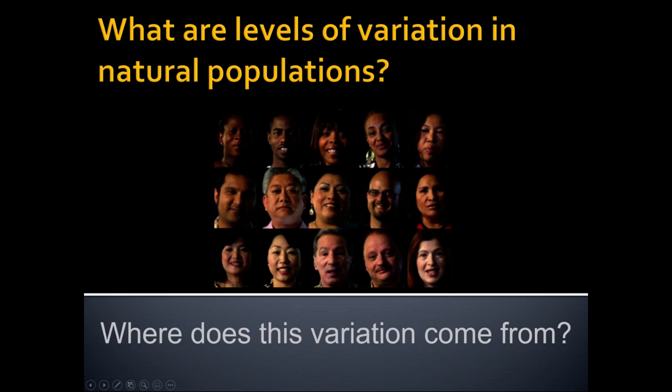In general, levels of variation in natural populations are generally very high. We can see this in our own species and in others. Today, we know that all of this variation — all of these differences from one individual to the next — originates as a mutation. So all variation comes initially from mutations.